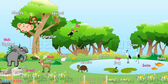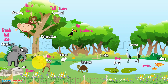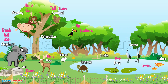Some animals have a tail, some have a trunk, some have hairs, and some have feathers. Some animals live on trees, some on the ground, some in water, and some underground.